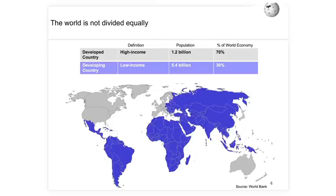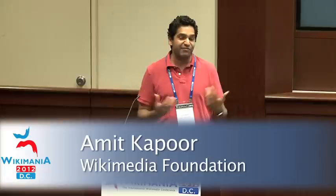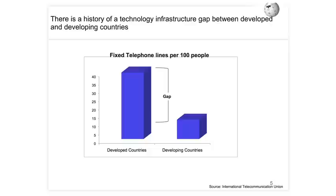The world is essentially not divided equally. We have about 75% of the world's population living where about 30% of the money is — 5.5 billion people in developing countries which only has 30% of the entire world's GDP. Blue countries on the map equal developing, gray equals developed. The gap between developing and developed countries has always been huge from a technology and infrastructure standpoint.